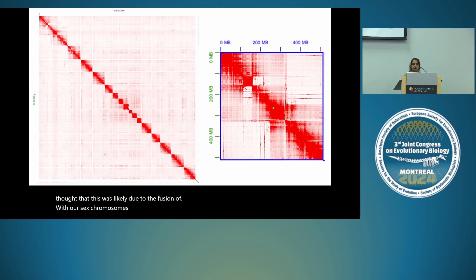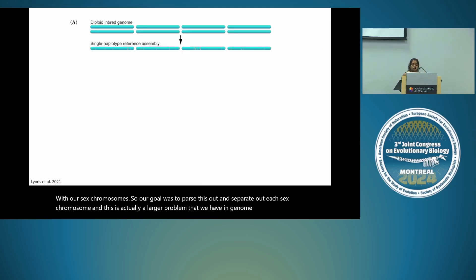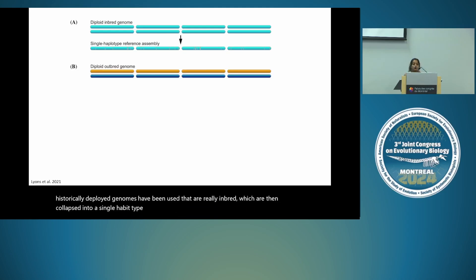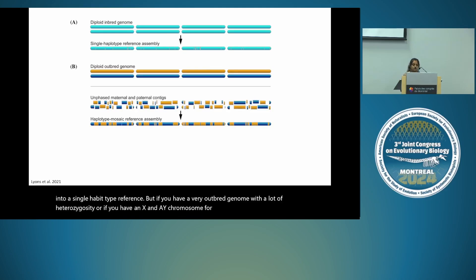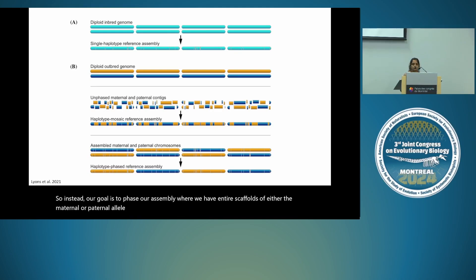Our goal was to parse out and separate each sex chromosome. This is a larger problem in genome assemblies: historically diploid genomes from inbred organisms were collapsed into a single haplotype reference. But if you have a very outbred genome with a lot of heterozygosity, or if you have X and Y chromosomes, that collapsed reference becomes very mosaic and not biologically accurate. Instead, our goal is to phase our assembly so that we have entire scaffolds of either the maternal or paternal allele, which is more biologically accurate — though this is hard enough to do even in autosomes.